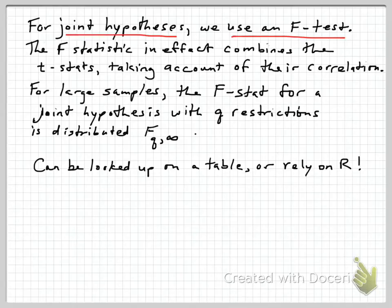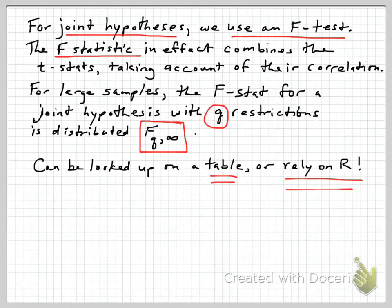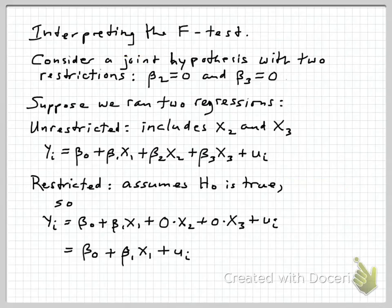We need a different technology for conducting joint hypotheses, and we typically do it using an F-test. We calculate an F-statistic from the regression results. In effect, it's combining the separate t-stats in a way that takes account of their correlation and the double jeopardy problem. For large samples, this F-statistic for a joint hypothesis with q restrictions is distributed with an F-distribution with q degrees of freedom in the numerator and infinite degrees of freedom in the denominator. You can look this up in a table or rely on statistical software to run the test.